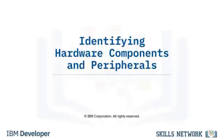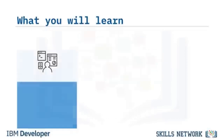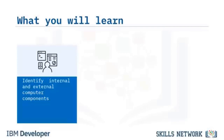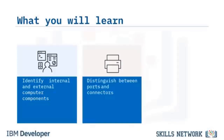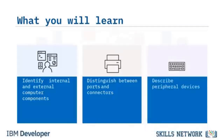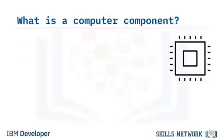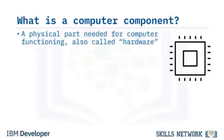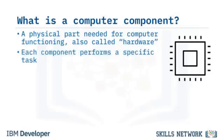Welcome to Identify Hardware Components and Peripherals. After watching this video, you will be able to explain the difference between internal and external components, describe what a peripheral device is and what it does, and contrast an interface, a port, and a connector. A computer component is a physical part needed for computer functioning, also called hardware, and each component performs a specific task.